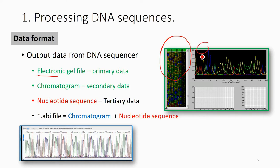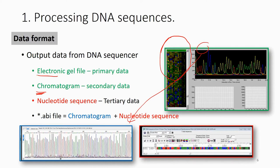The software turns this image into a chromatogram. Based on the chromatogram, it can read the nucleotide and give you the nucleotide sequence file. If you double click this file with proper software, it will show you the sequence with peaks. Some peaks may be too close to each other — the software might interpret two T's as one T, for example. So you need to check it and make corrections in the nucleotide file. This is an ABI file — the raw data output from the sequencer.